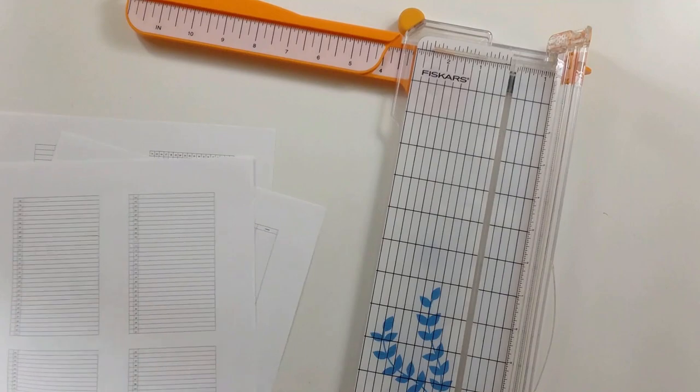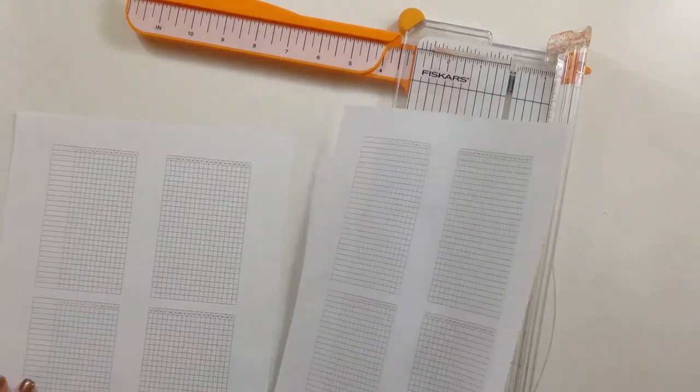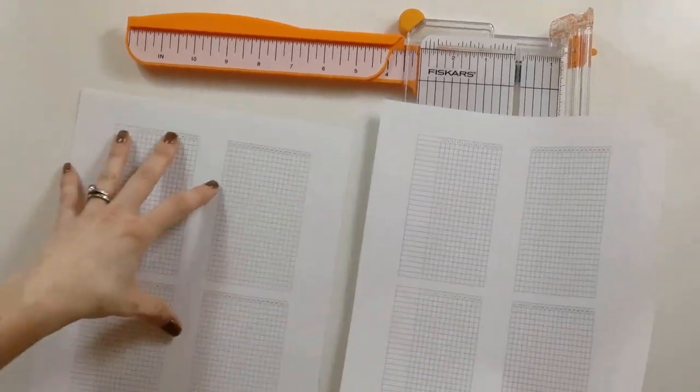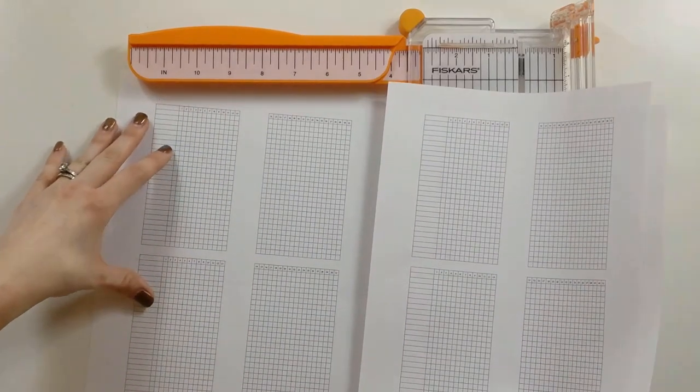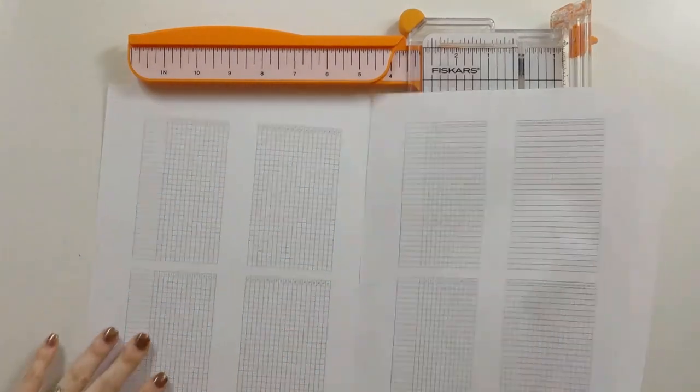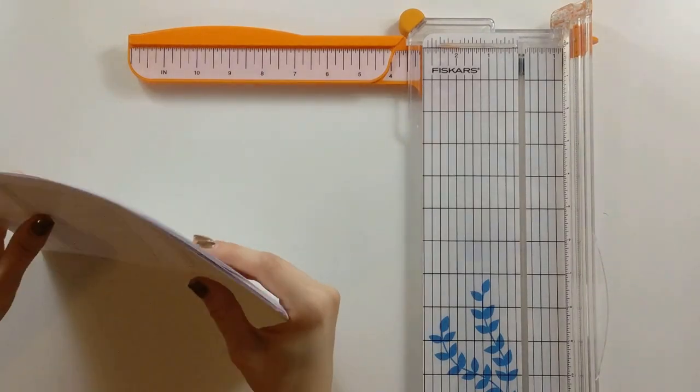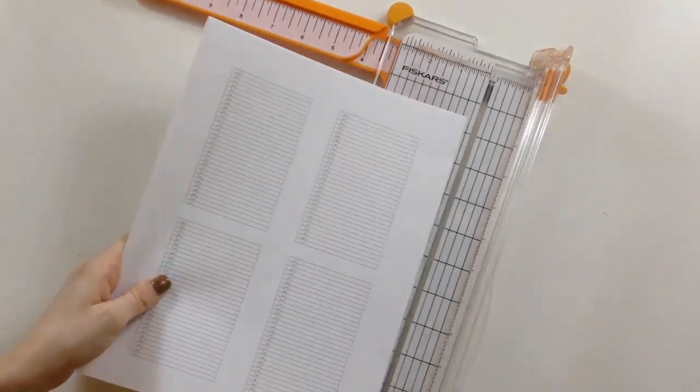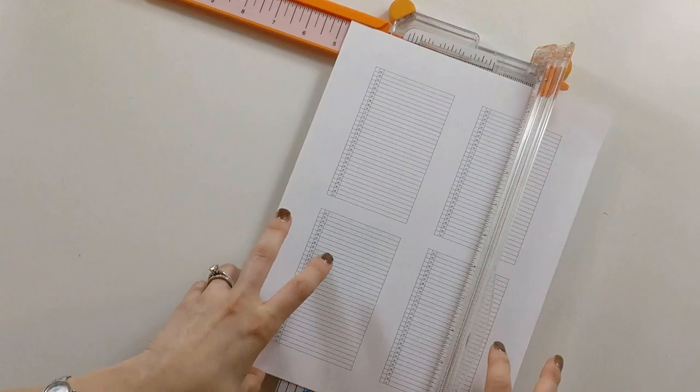All right, so we're going to just trim this so I can show you how this worked. Got everything going. You'll notice it's like all four across, so you end up with four different versions of this from one set of printing.